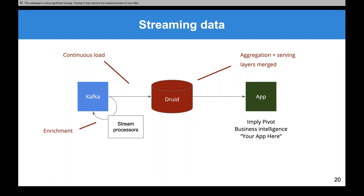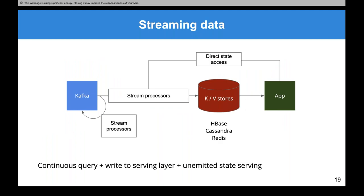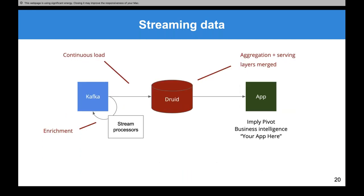You still want a way to enrich data before it goes into Druid — stream joins, attaching geolocation data. It's still best to do that with something like a stream processor for performance reasons. Stream processors do have a strong place: enriching data and preparing it to be loaded into a database. You then do a continuous load from Kafka into Druid. In Druid, the aggregation and serving layers are merged — instead of separating the aggregation layer into a stream processor and the serving layer into a state store or key-value store. That merging is what gives you the power and flexibility.